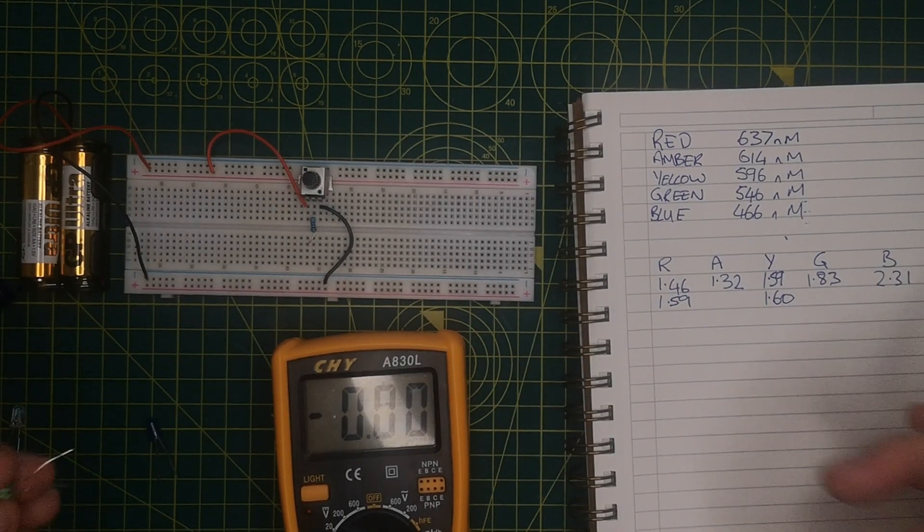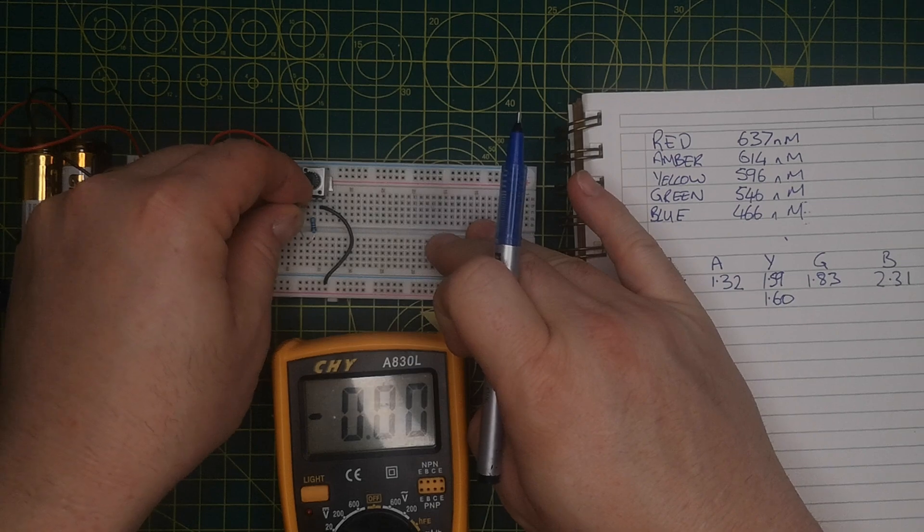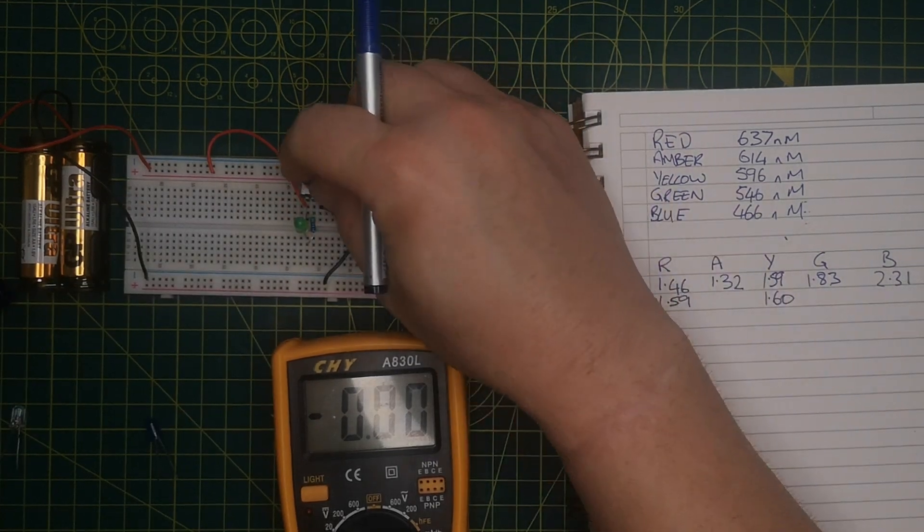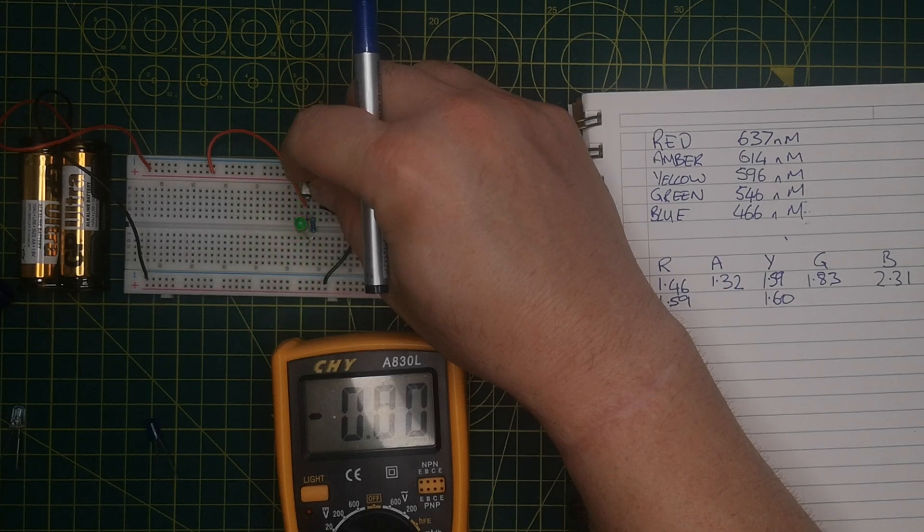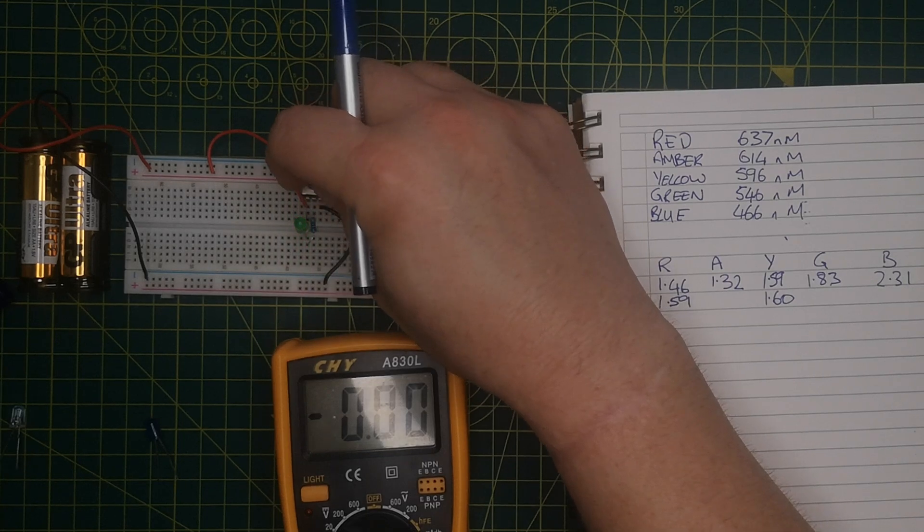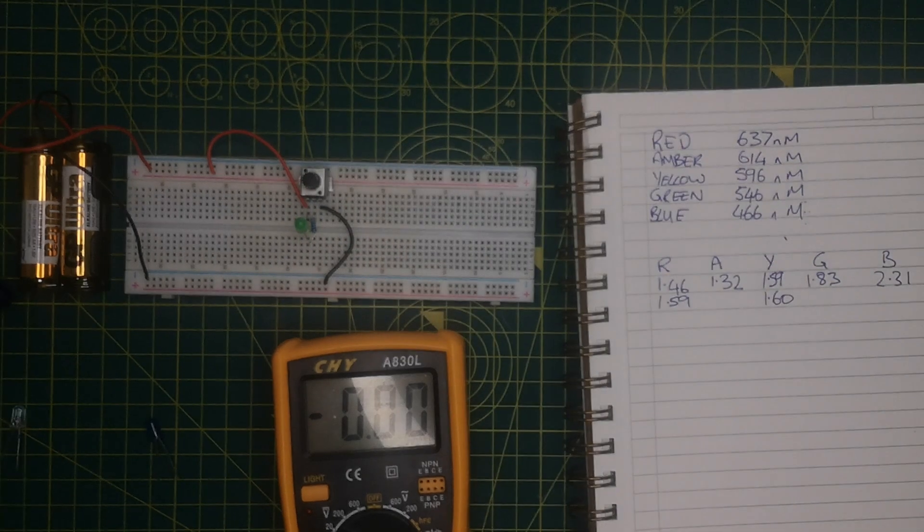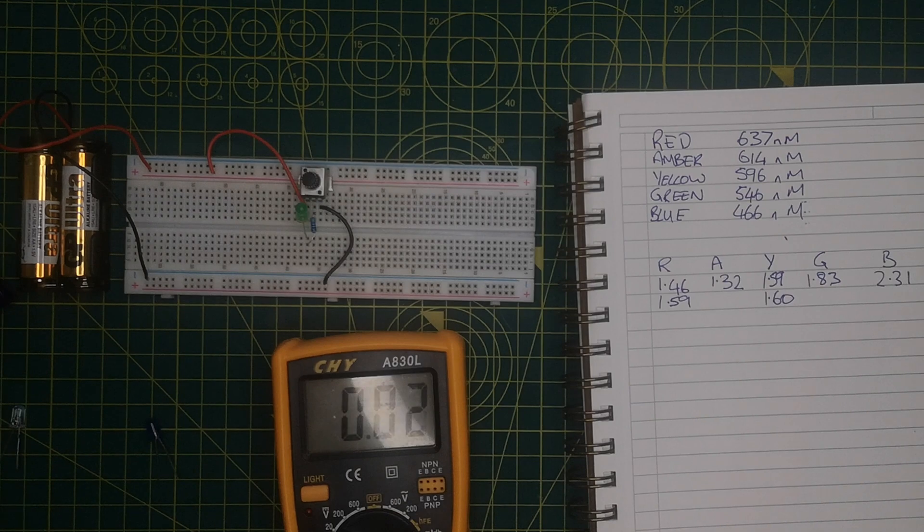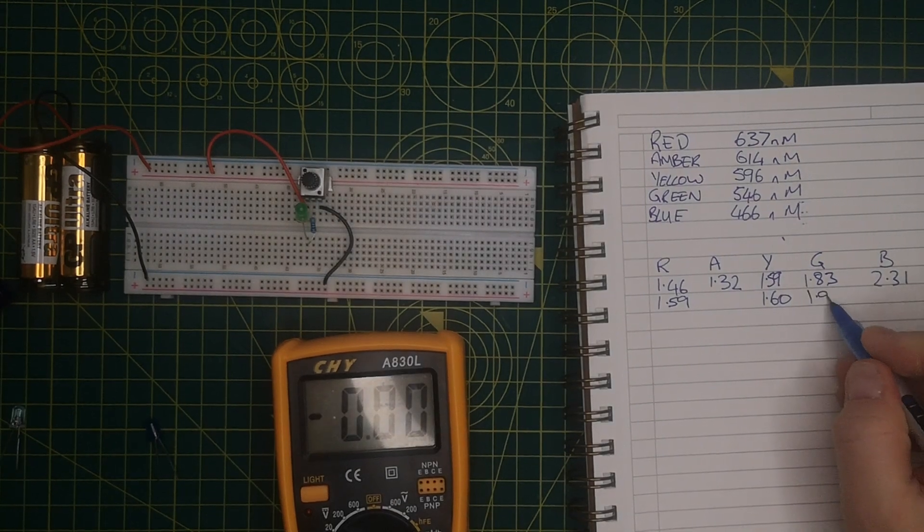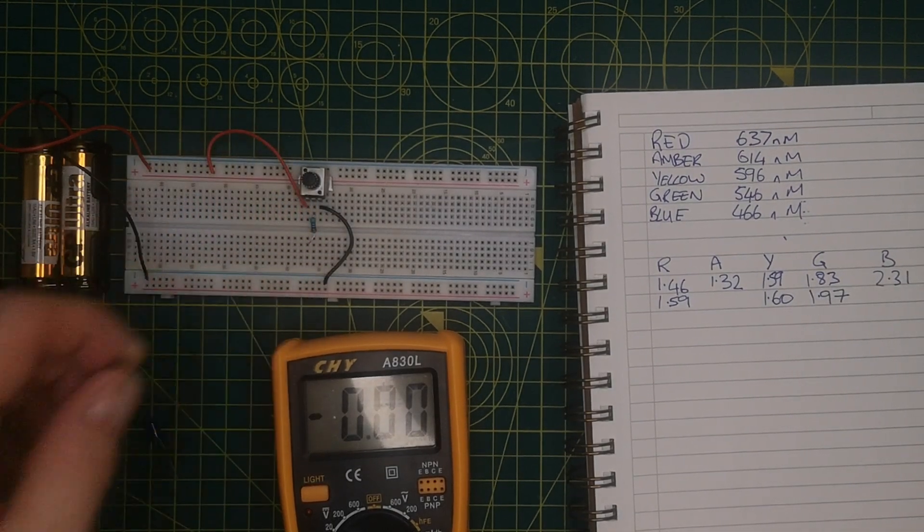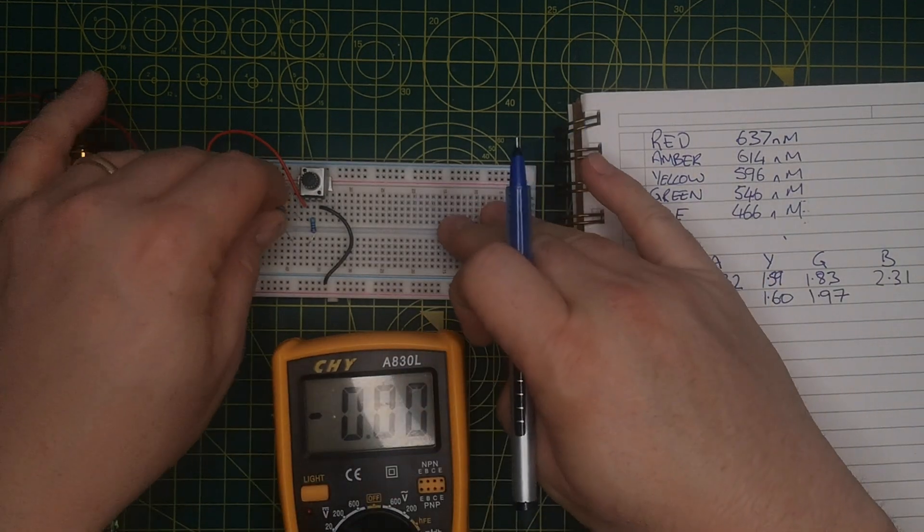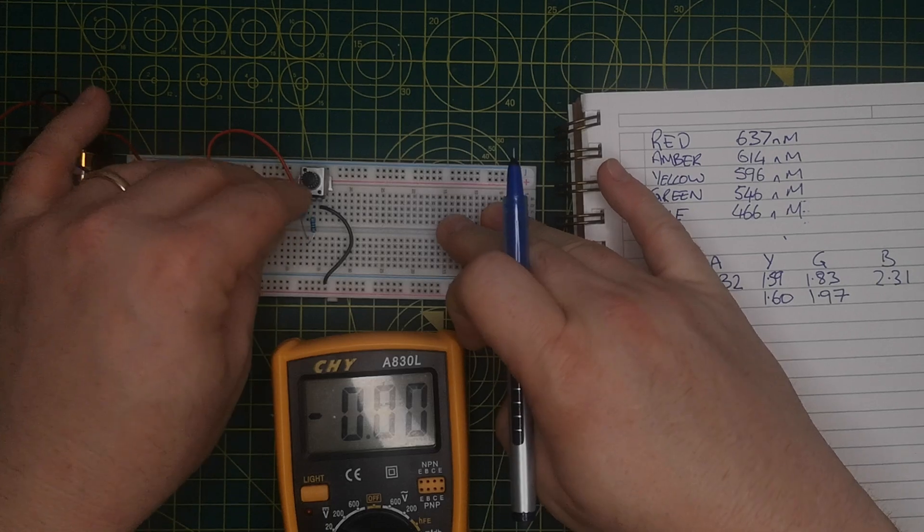So now let's put the green one in. And the green one's here. I'm going to adjust it till it lights. And we find that the green one is there. It's about there. Which is 1.97. Possibly a bit high. And I'll just do the blue and the amber. And then I'll cut away. Because there's nothing more boring than watching people doing this.